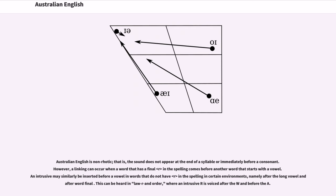Australian English is non-rhotic, that is, the /r/ sound does not appear at the end of a syllable or immediately before a consonant. However, a linking /r/ can occur when a word that has a final R in the spelling comes before another word that starts with a vowel. An intrusive /r/ may similarly be inserted before a vowel in words that do not have R in the spelling in certain environments, namely after the long vowel /ɑː/ and after word final /ə/. This can be heard in 'law r in order', where an intrusive R is voiced after the W and before the A.